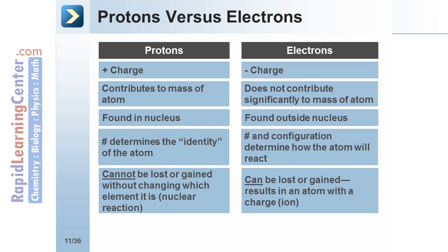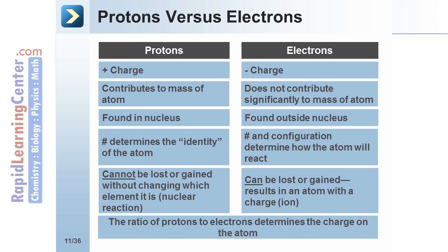Electrons can be lost or gained. The ratio of protons to electrons determines the charge on the atom. If there is a greater number of protons than electrons, the overall atom charge will be positive. However, if there is a smaller number of protons than electrons, the overall charge will be negative.